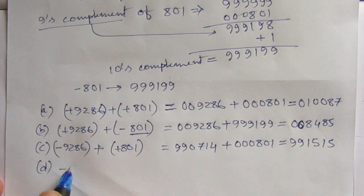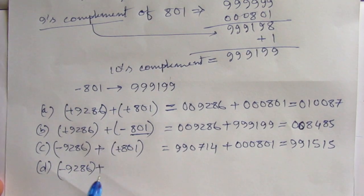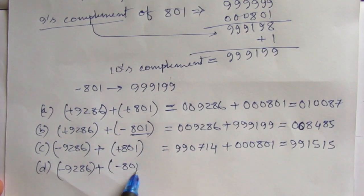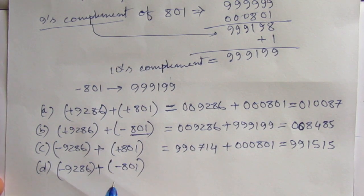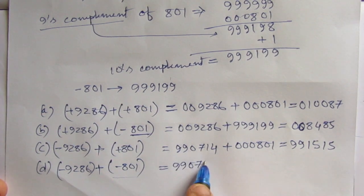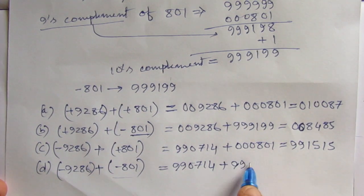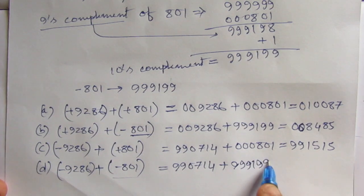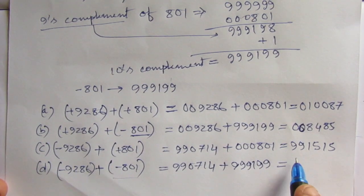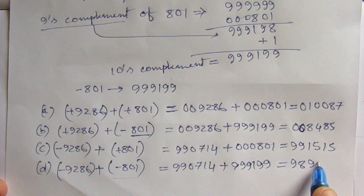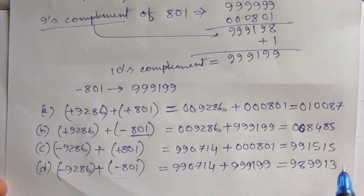Now, let us see the fourth part. Minus 9, 2, 8, 6 plus minus 8, 0, 1. So, here we have both the negative numbers. So, we have to replace these negative numbers with their 10's complement and then just add it. So, the 10's complement of 9, 2, 8, 6 is 9, 9, 0, 7, 1, 4. So the 10's complement of 8, 0, 1 is 9, 9, 9, 1, 9, 9. So we will get here 9, 8, 9, 1, 3. So, this is the answer.